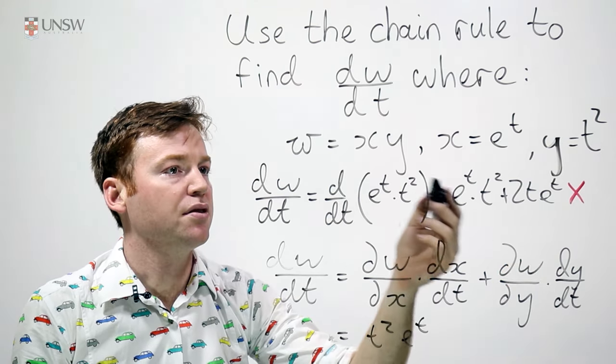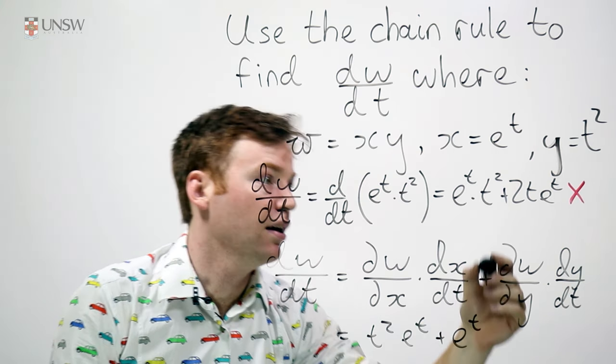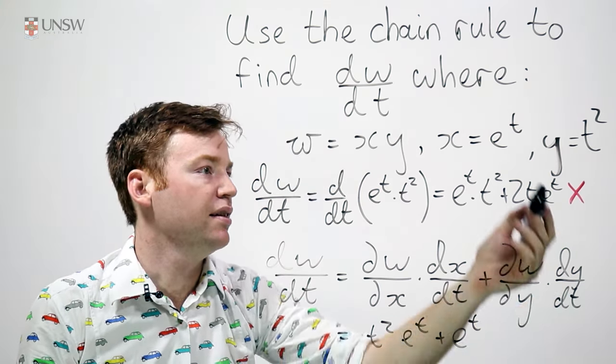dw/dy, that's x, which I'll write as e to the t. And dy/dt, that's just 2t.